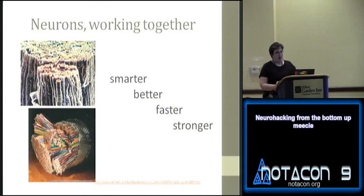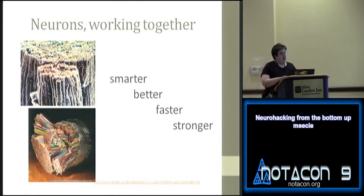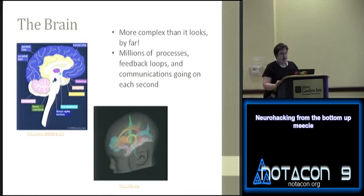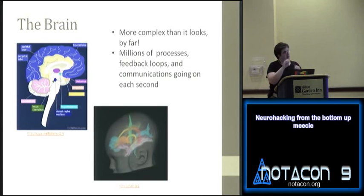Everything so far has been very low-level — single units, one at a time. Now I want to talk about neurons working in ensemble, and the most obvious example of that is the brain. The brain looks like an amorphous mass of tissue, but it's a very highly structured, complicated organ. The lower picture shows just a small subset of the neural pathways in the brain — you can see the level of organization with fibers running in parallel. There are literally millions of processes, feedback loops, and communications happening at all times.